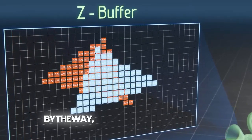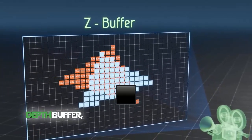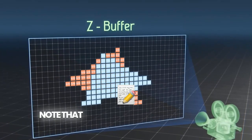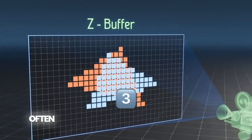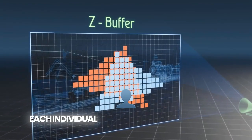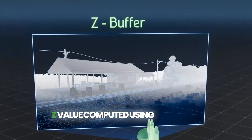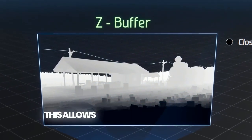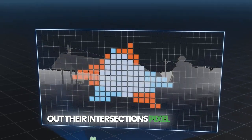Here's the image of the z or depth buffer, wherein black is close and white is far. Note that because these triangles are in 3D space, the vertices often have three different z-values, and thus each individual pixel of the triangle needs its z-value computed using the vertex coordinates. This allows intersecting triangles to properly render out their intersections pixel by pixel.